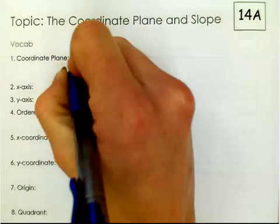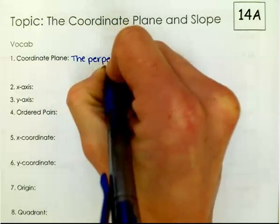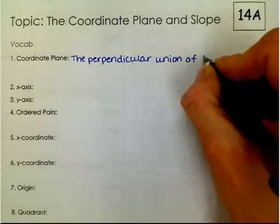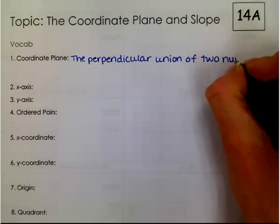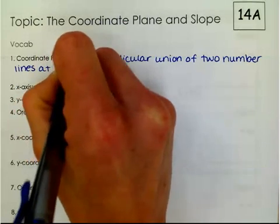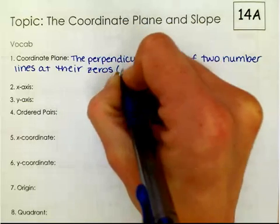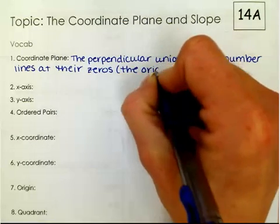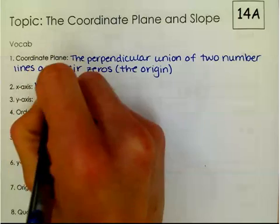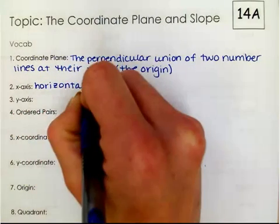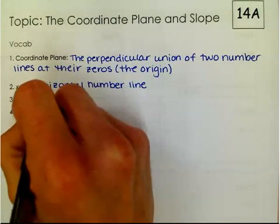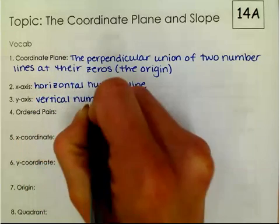The coordinate plane is the perpendicular union of two number lines at their zeros, which we call the origin. The x-axis is the horizontal number line in the coordinate plane, and the y-axis is the vertical number line in the coordinate plane.